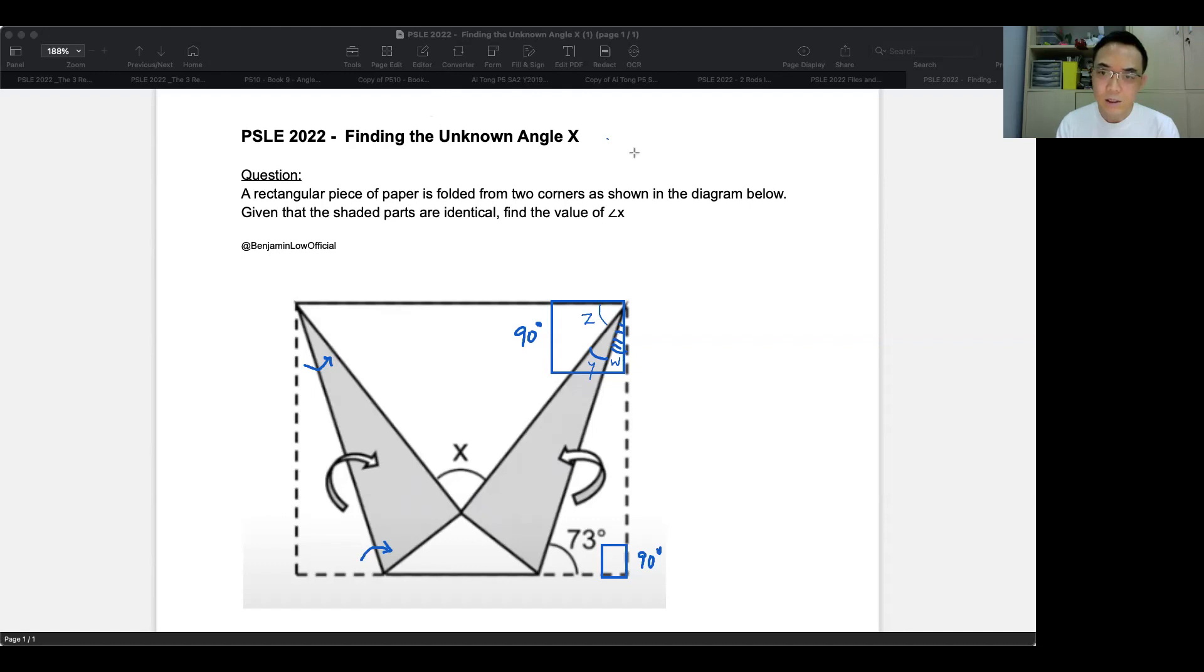And since this is a triangle, then the sum of the three angles is 180.